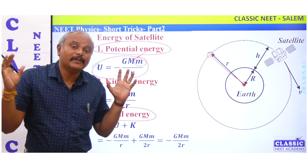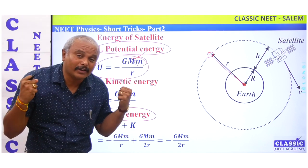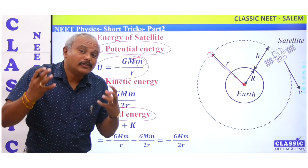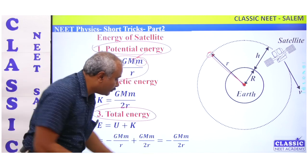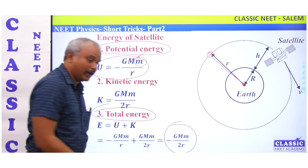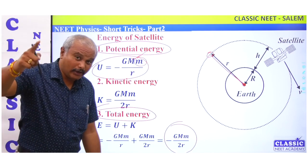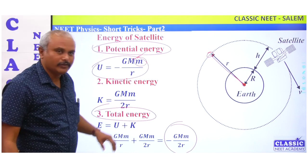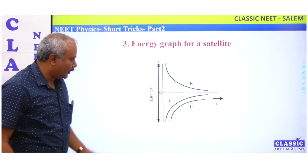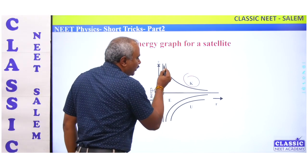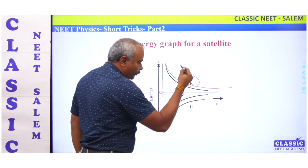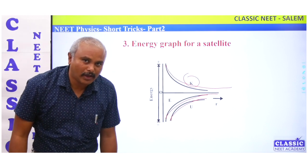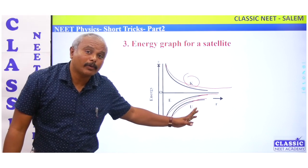Binding energy always — the total energy is called binding energy. That energy exists in a conservative field. So minus GMm by 2r is the binding energy. Kinetic energy has a positive slope, potential energy and total energy have a negative slope. All of them are rectangular hyperbola graphs.